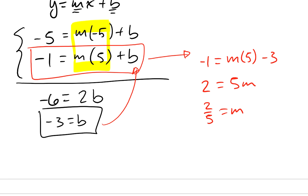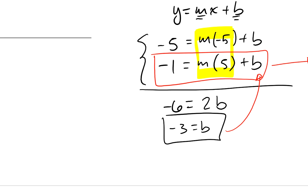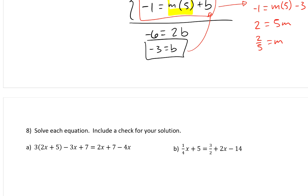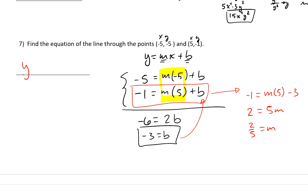My slope is 2 fifths and my y-intercept is negative 3. The equation of this line is y equals 2 fifths x minus 3.